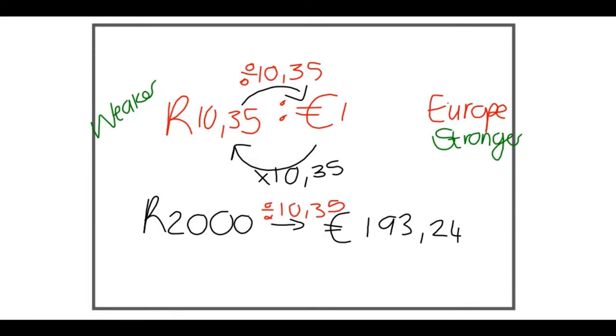What if I now have 7 euro, and I want to convert that to Rand? Look at your arrows, you're going to have to multiply that 7 by 10,35. When you multiply, you'll see you get something like 72,45.